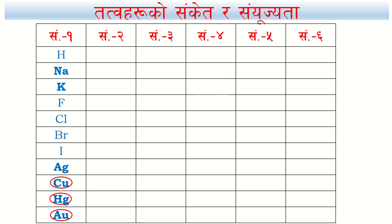Gold (Au) — you need to remember these symbols. For sodium and potassium, you write their letter symbols. For silver, copper, mercury, and gold, you must also remember their letter symbols. You should write these symbols for each element; non-metals also need to be remembered.